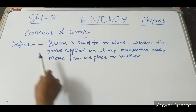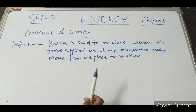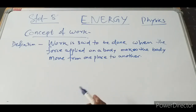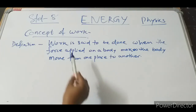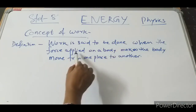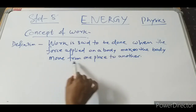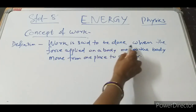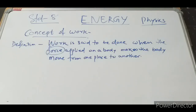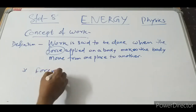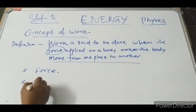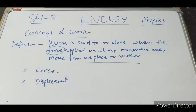Here, while discussing the definition of work, we say that work is said to be done when the force applied on a body makes the body move from one place to another. So two concepts we are getting: first, force is applied on the body; second, there is a displacement of the body.